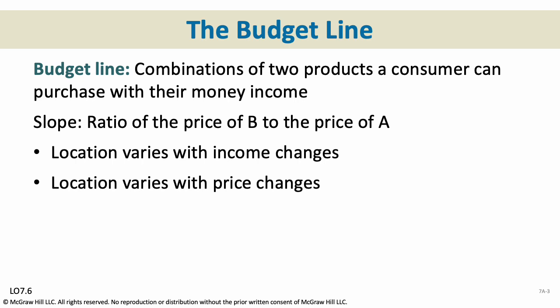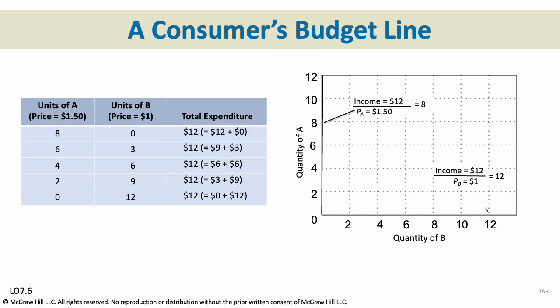Here is an example of a budget line. In this case, someone has $12 to spend, product A costs $1.50, and product B costs $1.00. So they could buy at most 12 units of B, 8 units of A, or some combination in between.